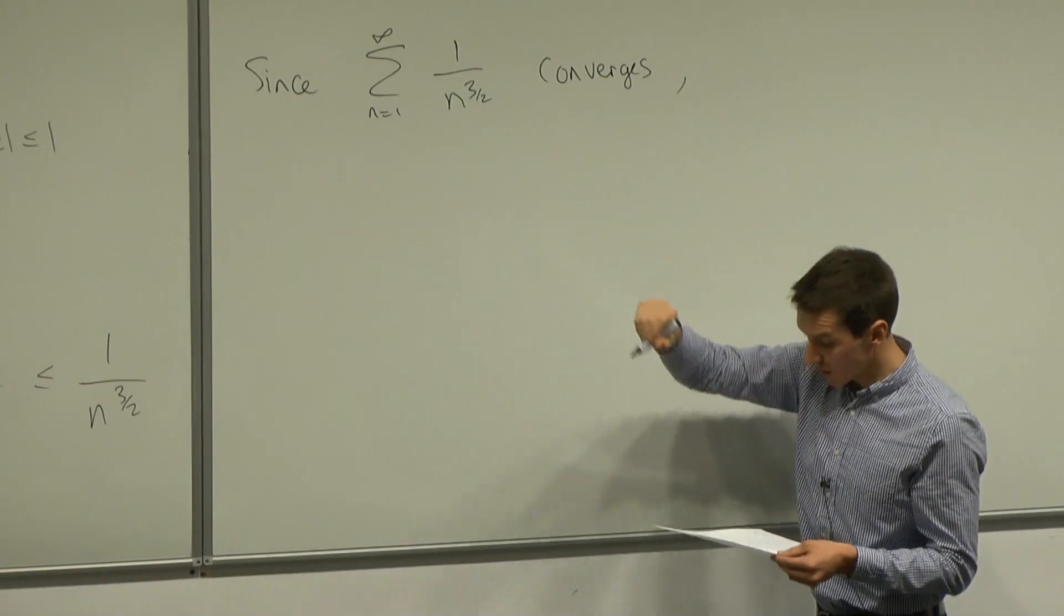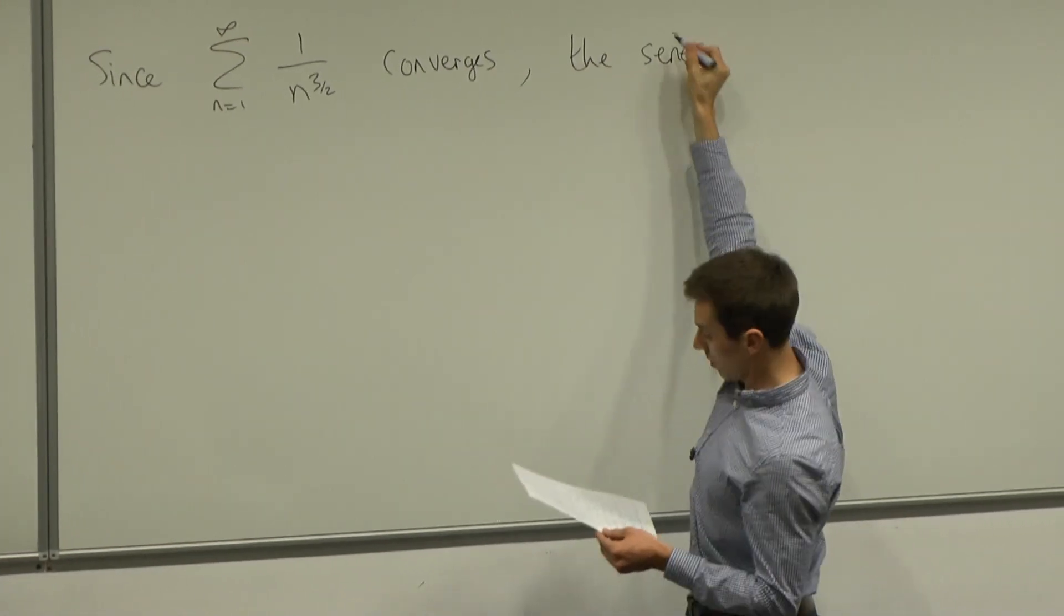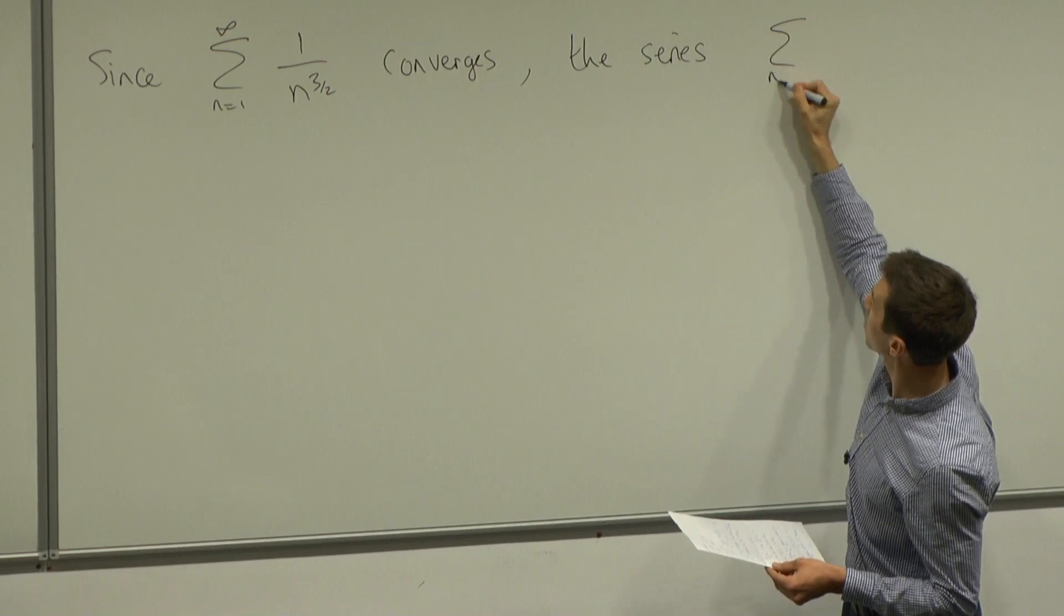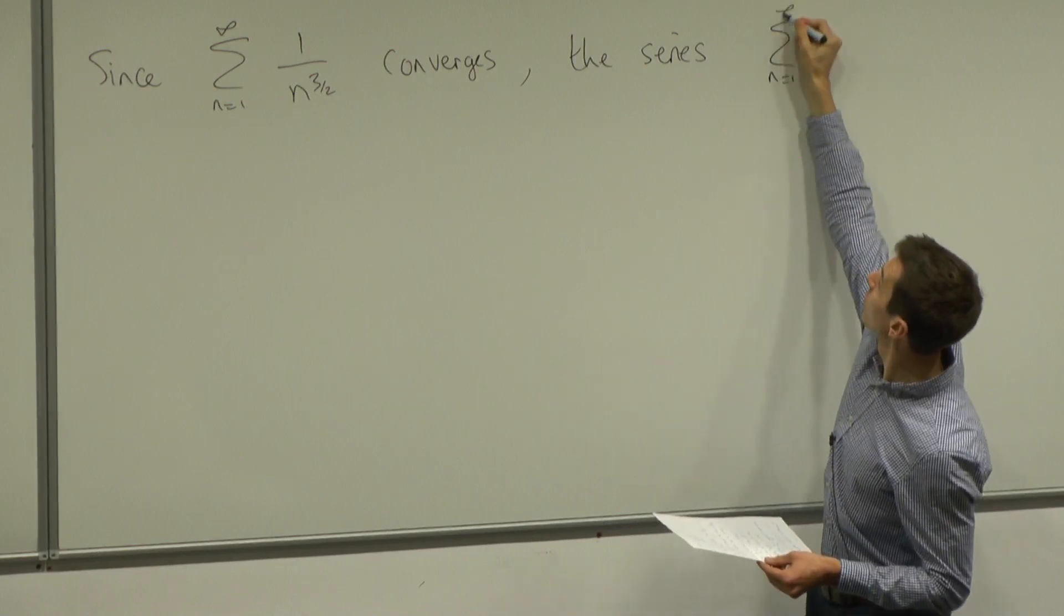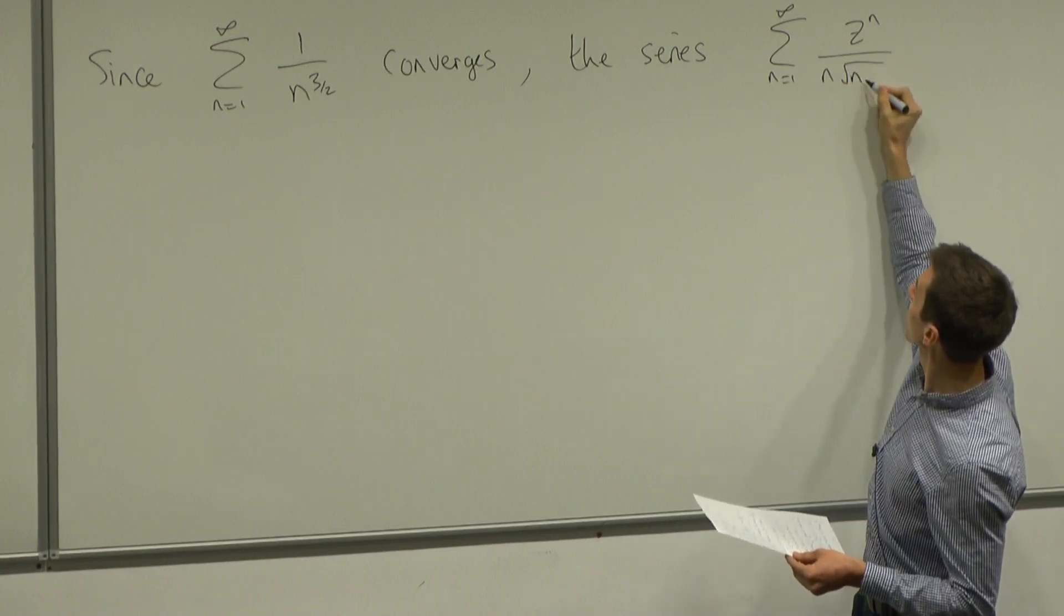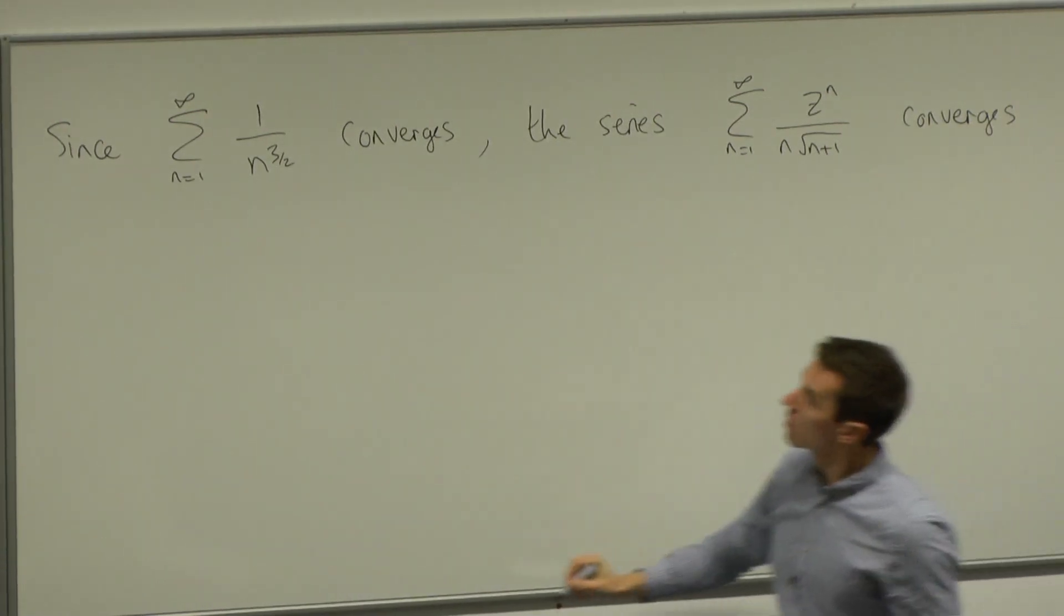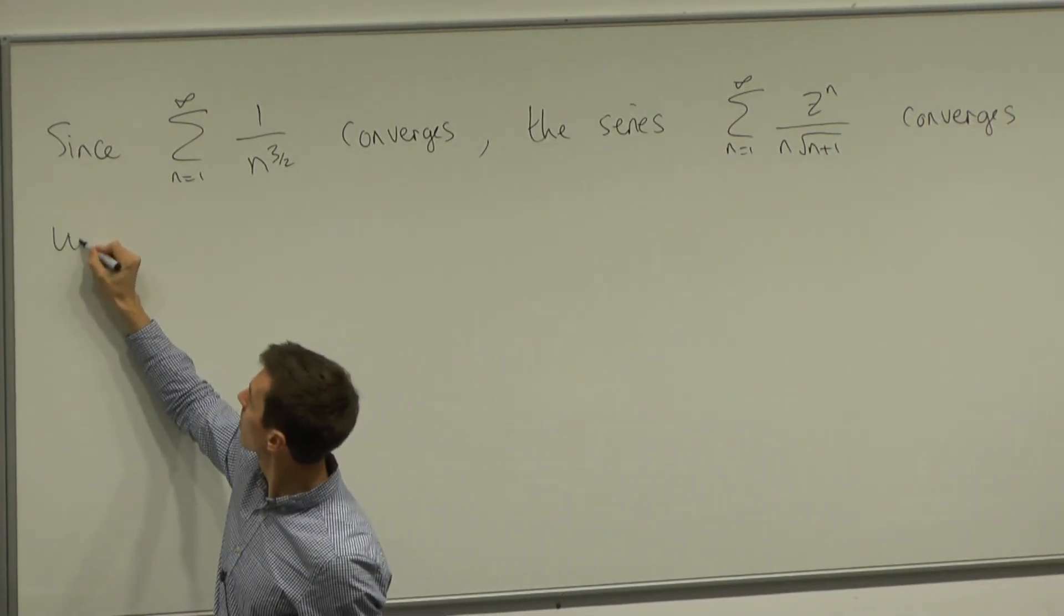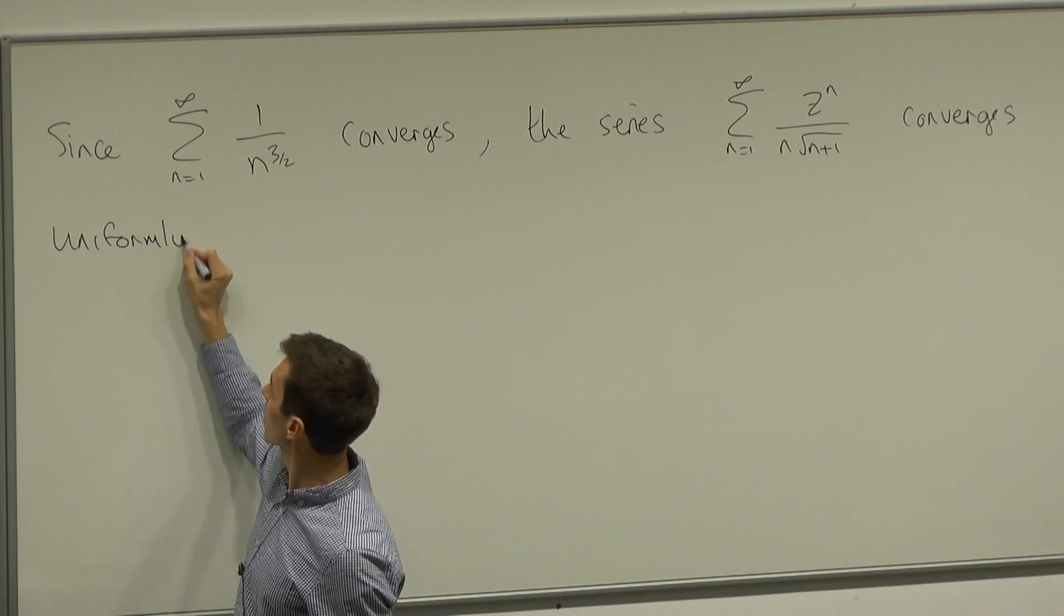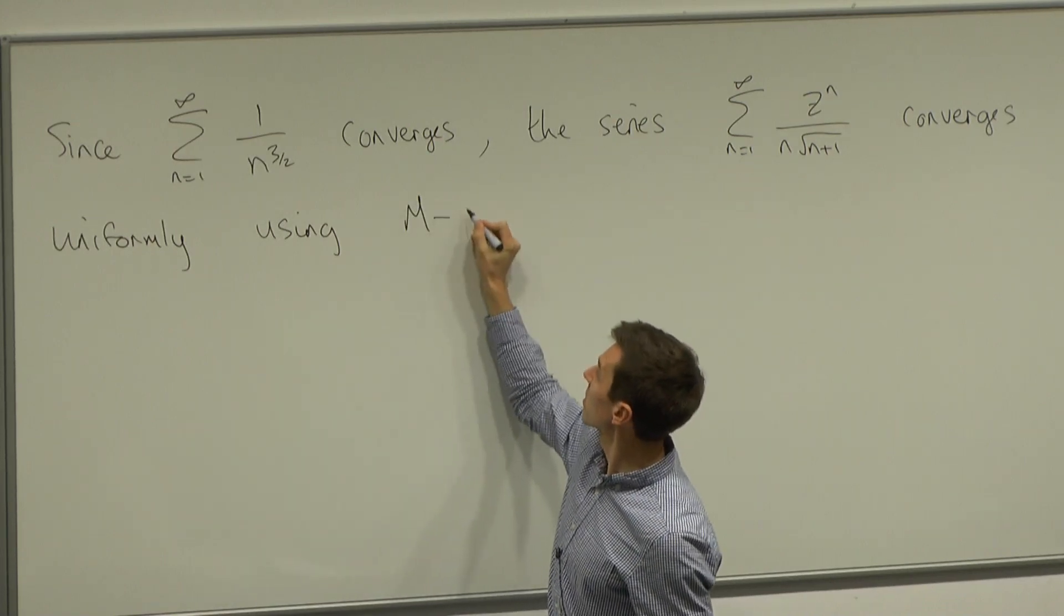And because we know this, then we can conclude that the series in the question, so the sum from 1 to infinity, z to the n over n into the square root of n plus 1, that this converges uniformly using Weierstrasser's m-test.